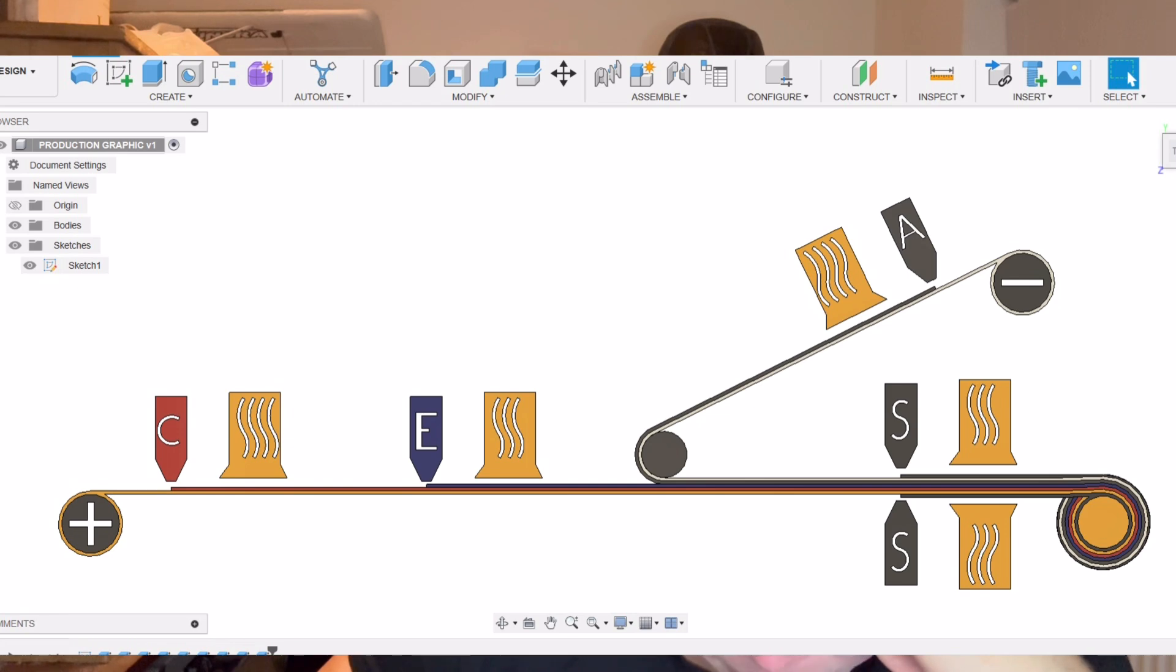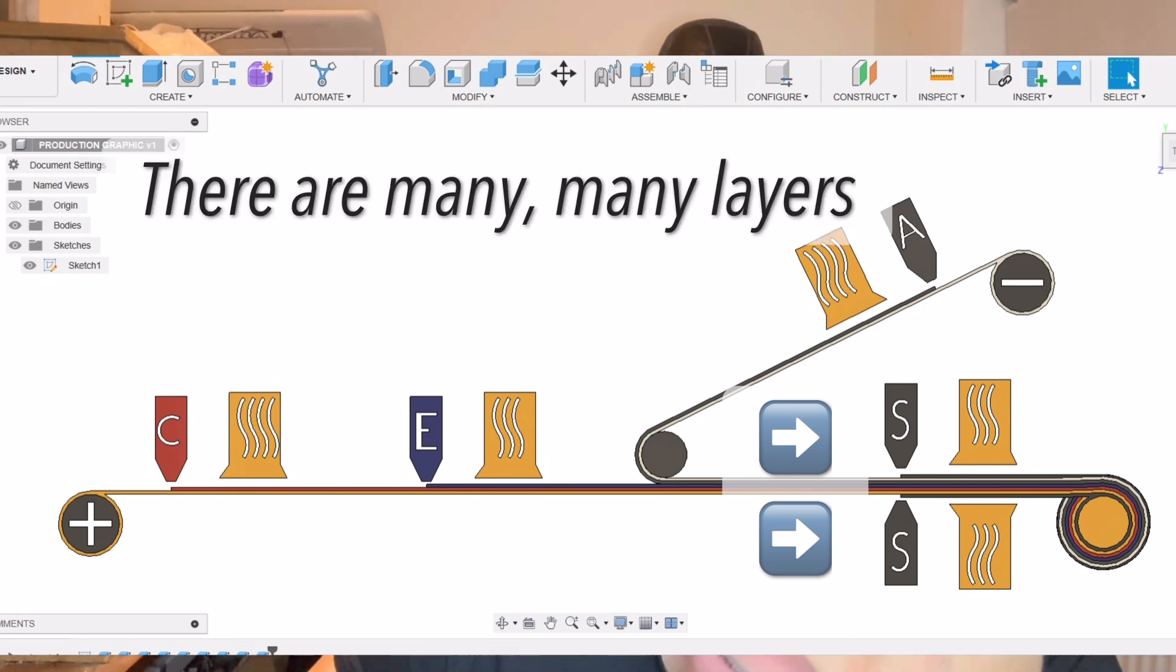As that foil gets pulled along it gets the cathode layer on, dried, then the electrolyte layered on and dried. On an opposing belt system for the negative current collector, the anode graphite gets coated and dried, then sandwiched onto the copper foil layer. It would have the surface separators applied, then all dried and coiled up into a nice tightly wound battery.